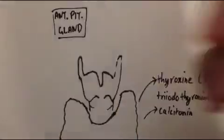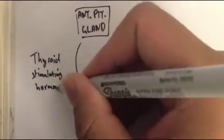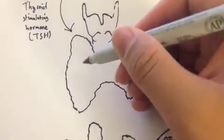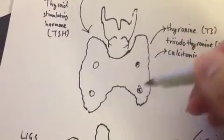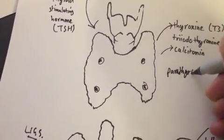Thyroid secretion is controlled by TSH which is secreted by the anterior pituitary gland. It also has parathyroid glands which are embedded within it.